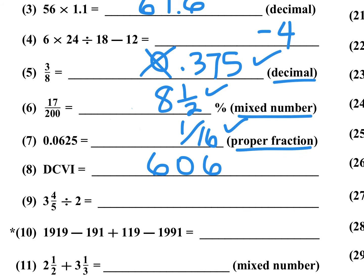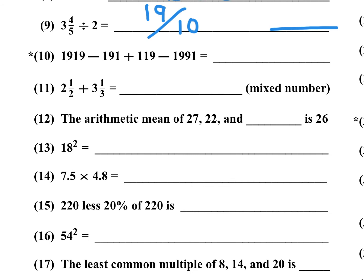Number 9: 3 and 4/5 divided by 2. Convert to an improper fraction: 5 times 3 is 15, plus 4 is 19, so 19/5. Dividing by 2 is the same as multiplying by 1/2, giving 19/10. You could write 19/10, 1.9, or 1 and 9/10 — all would be correct since the problem doesn't specify the form.